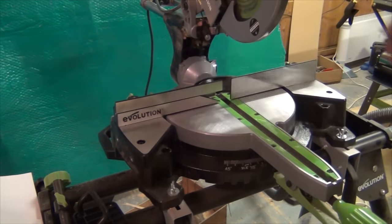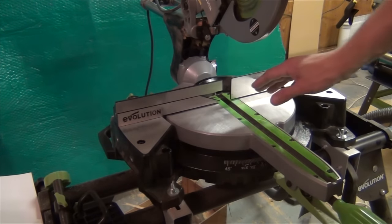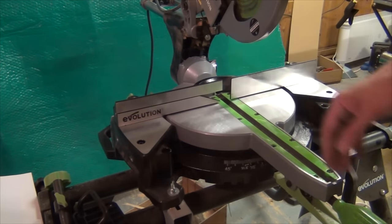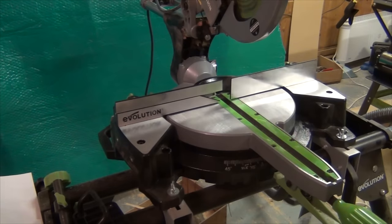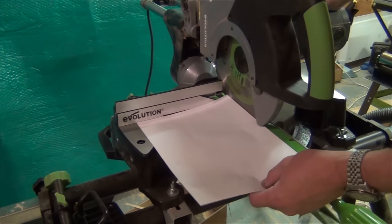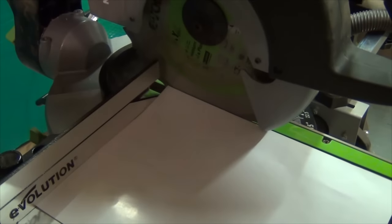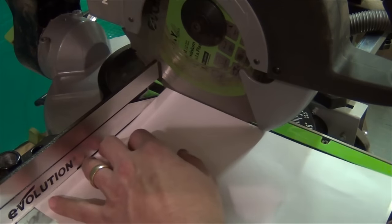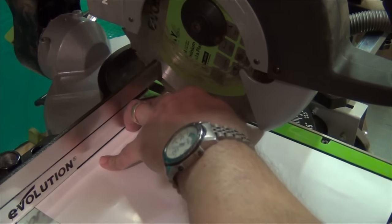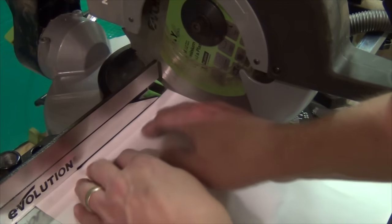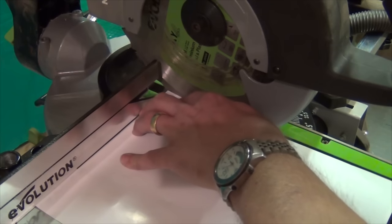The first measurement we're really concerned about is making the fence at 90 degrees to the blade when the miter is set at zero degrees. This time I'll use a sheet of paper. With the paper up against the fence, move it across to the blade. It seems to be touching front to back.